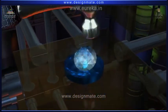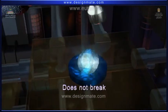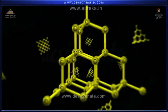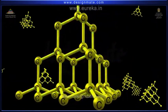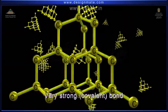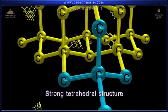When force is applied on a diamond, it does not break. As in a diamond, carbon atoms are bonded by very strong covalent bonds to each other to form a strong tetrahedral structure.